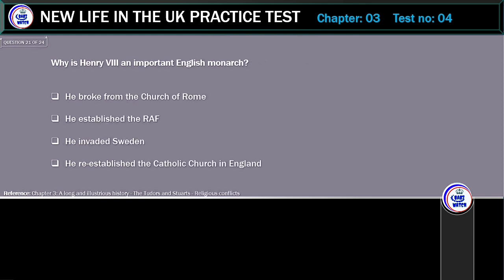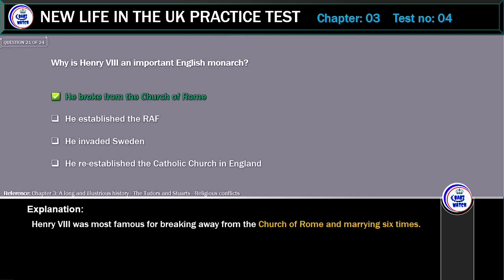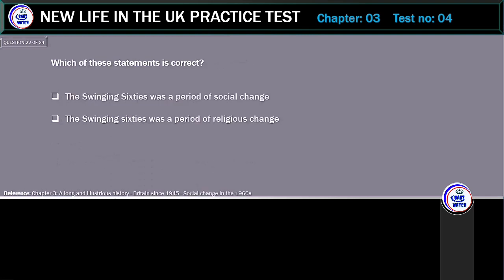Why is Henry VIII an important English monarch? Options: he broke from the Church of Rome, he established the navy, he invaded Sweden, or he re-established the Catholic Church in England. The correct answer is: he broke from the Church of Rome. Henry VIII was most famous for breaking away from the Church of Rome and marrying six times.